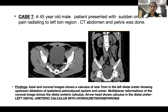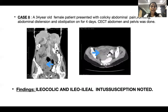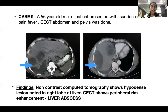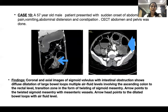Case 7: axial and coronal images show a calculus of 7 mm in the left distal ureter with upstream dilatation of the ipsilateral pelvicalyceal system and ureter — a case of left distal ureteric calculus with hydro-ureteronephrosis. Case 8: a 34-year-old female with ileocolic and ileoileal intussusception noted. Case 9: non-contrast CT shows a hypodense lesion in the right lobe of the liver and CECT shows peripheral rim enhancement — a case of liver abscess. Case 10: coronal and axial images of sigmoid volvulus show diffuse dilatation of large bowel loops with a transition zone in the form of twisting of the sigmoid mesentery — a case of sigmoid volvulus.